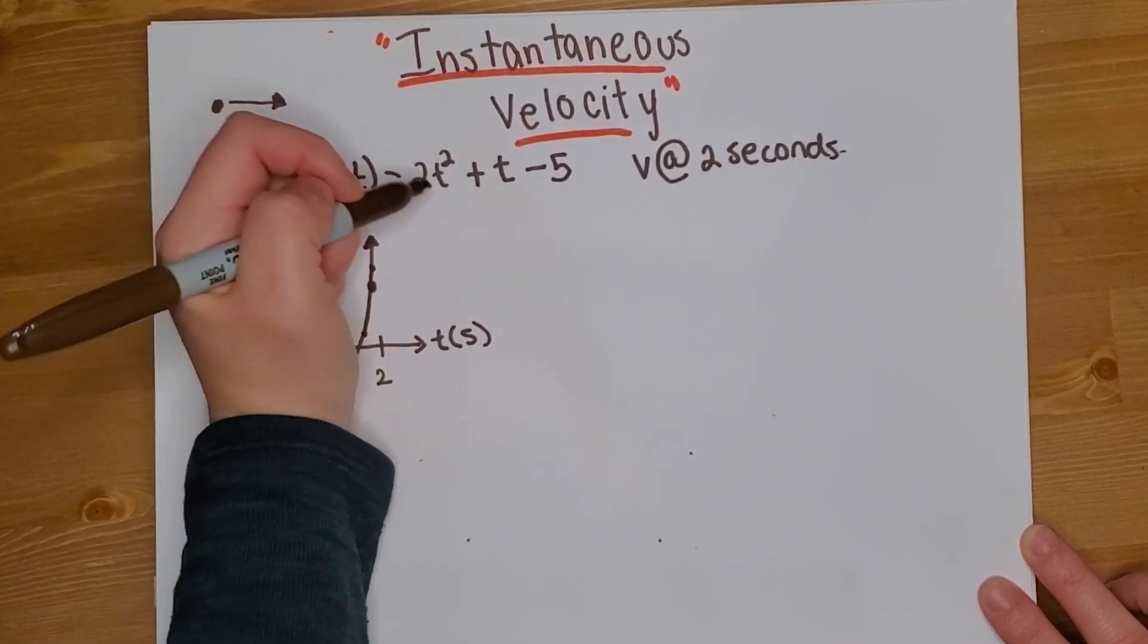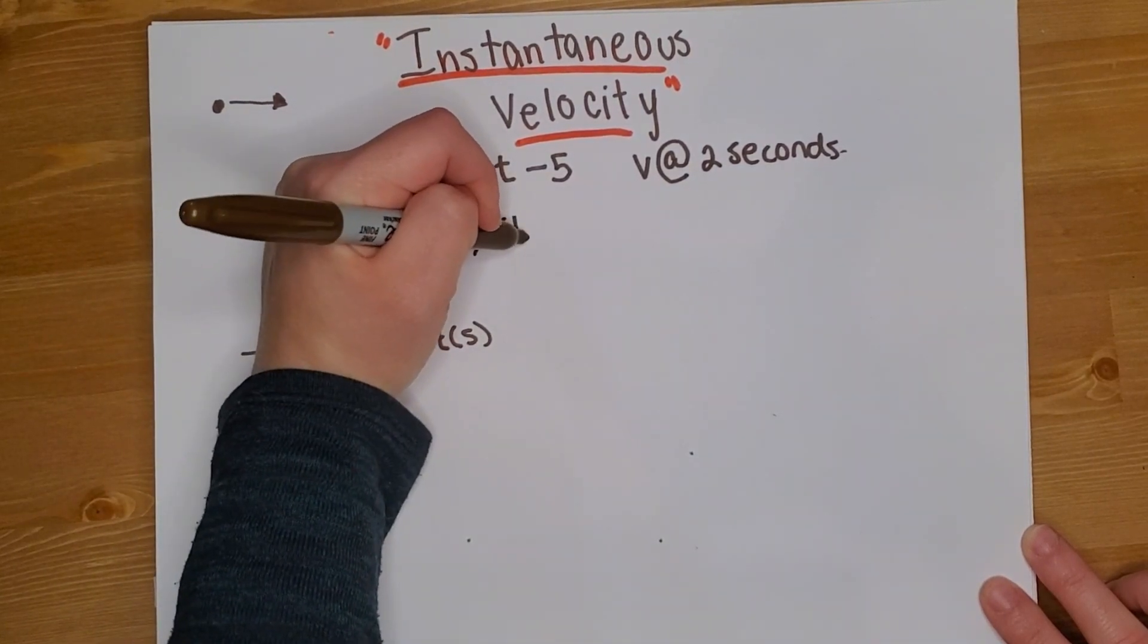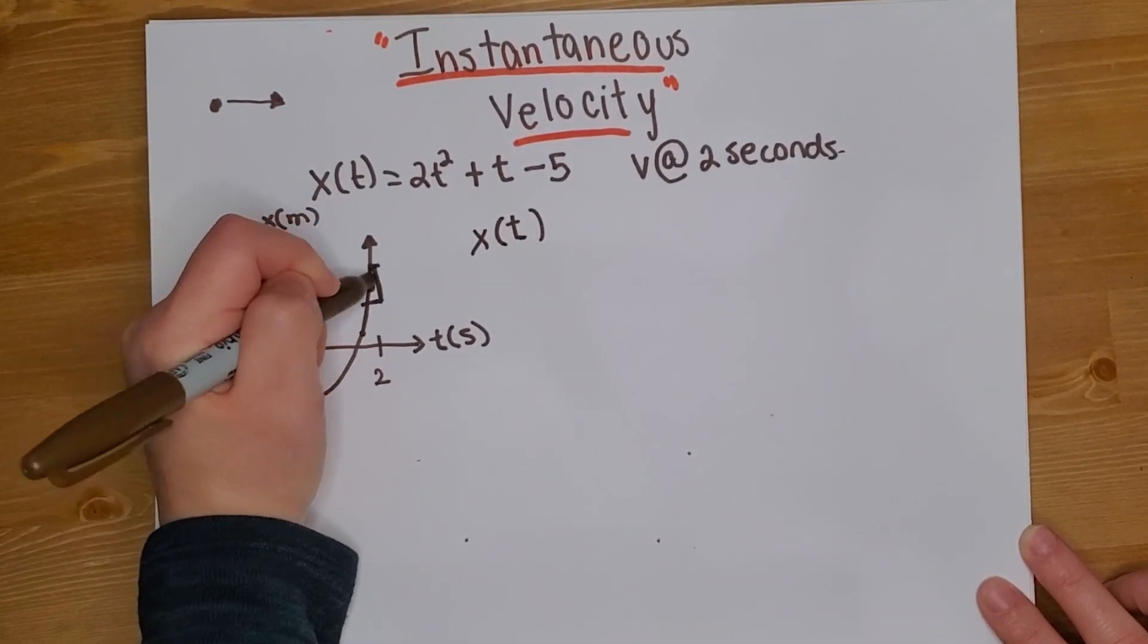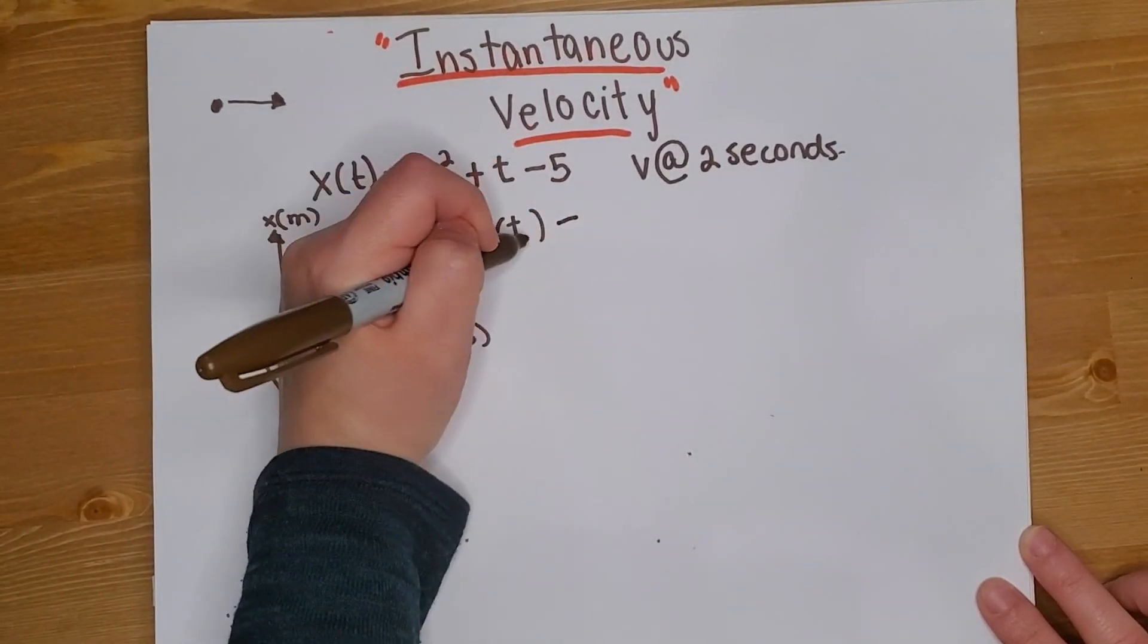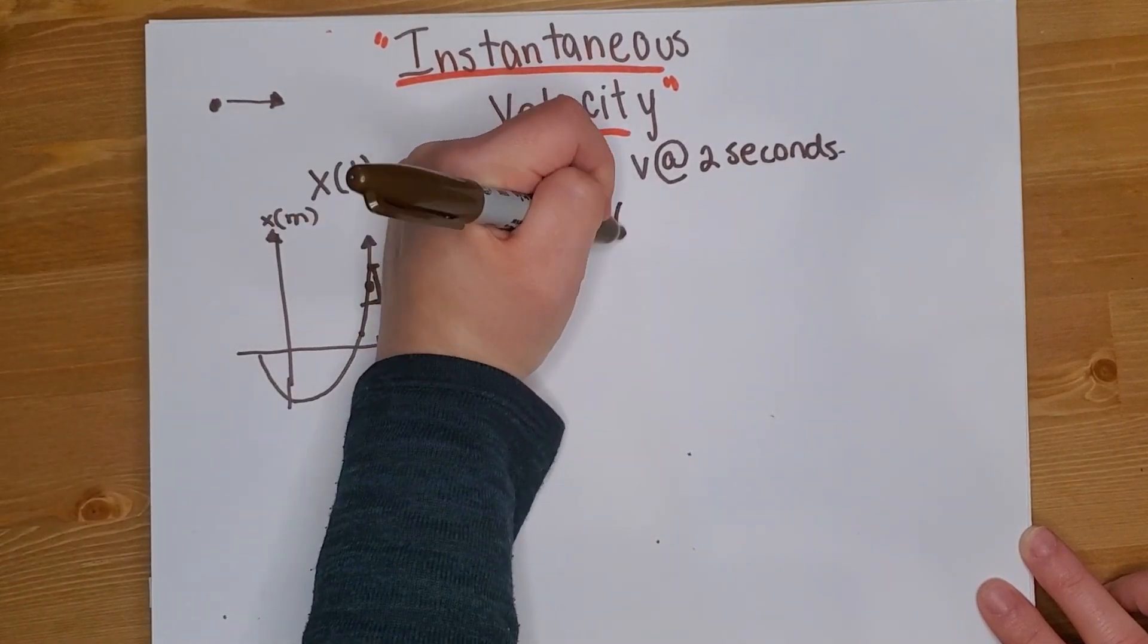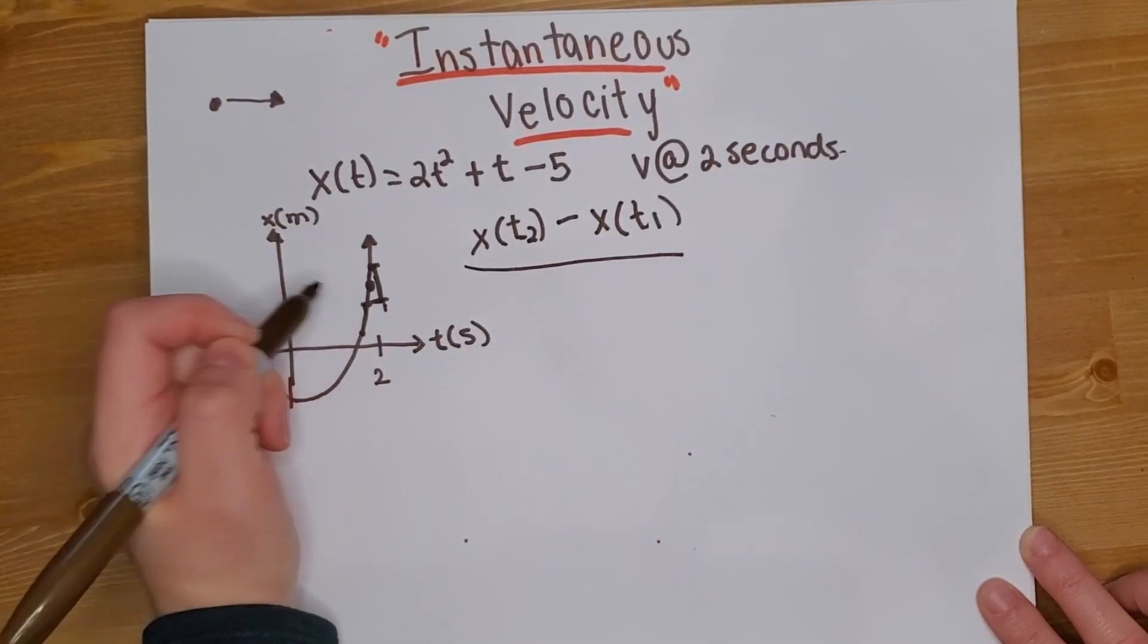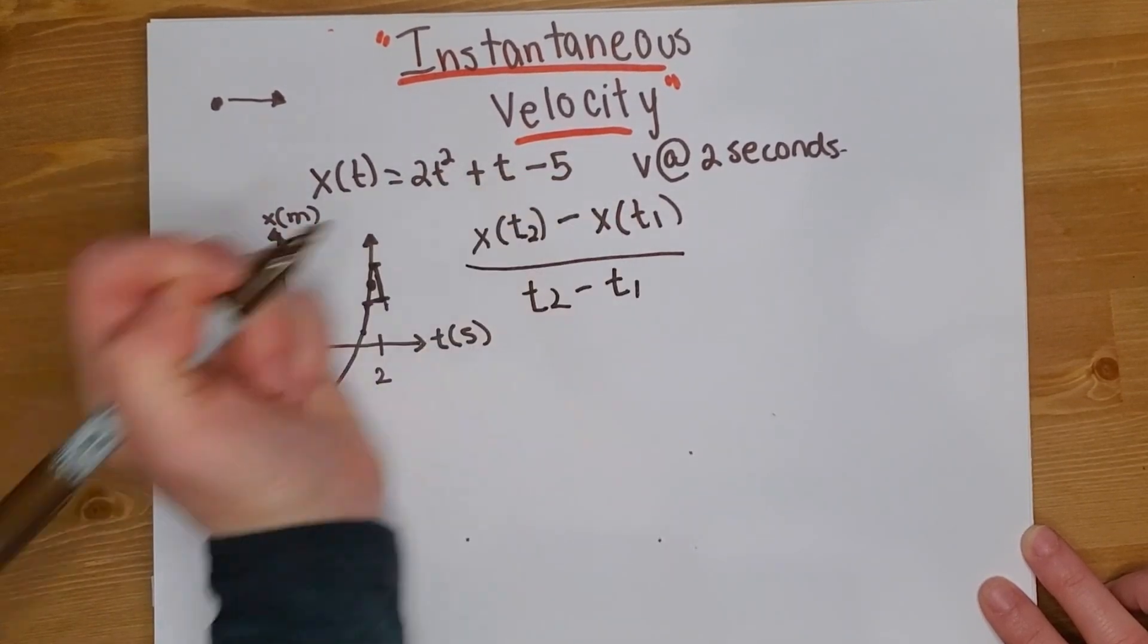So for the average velocity, we have to use the position because you have to do the slope. What you do is you get these two values minus, let's say this is the second value, my first value, which is this one, that all over these two values. So t₂ minus t₁.